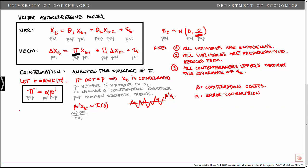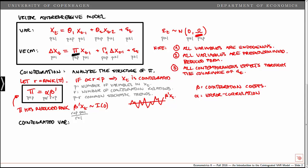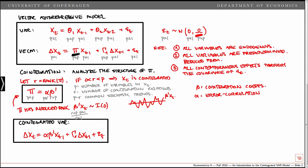We can use the property that under cointegration pi has reduced rank to decompose pi into alpha times beta prime, giving the cointegrated VAR model. That is the vector error correction model where we simply replace pi with alpha beta prime: delta xt equals alpha beta prime xt minus 1 plus gamma1 delta xt minus 1 plus epsilon t. Here beta prime xt minus 1 are the cointegration relations and alpha contains the adjustment, or error correction, coefficients.